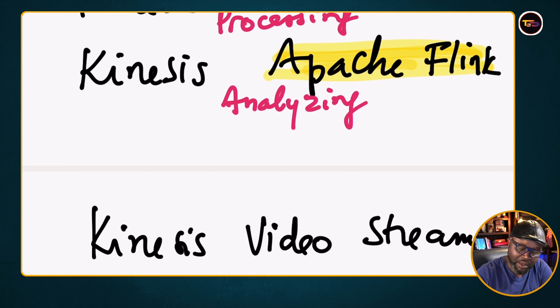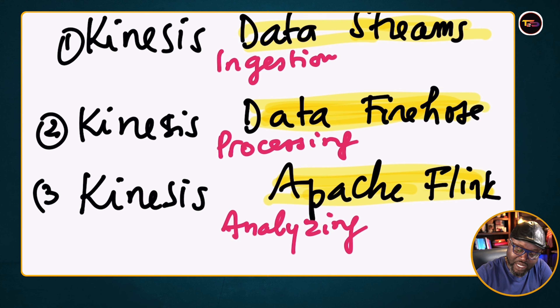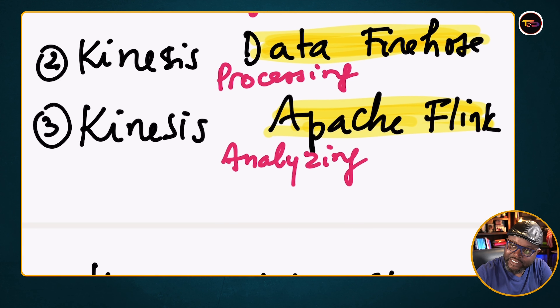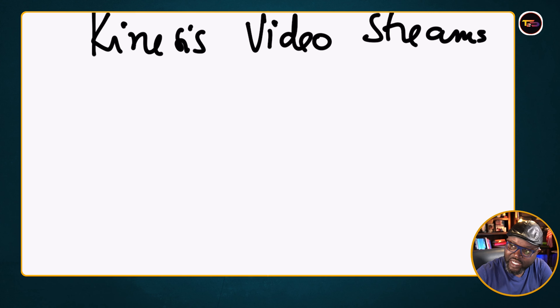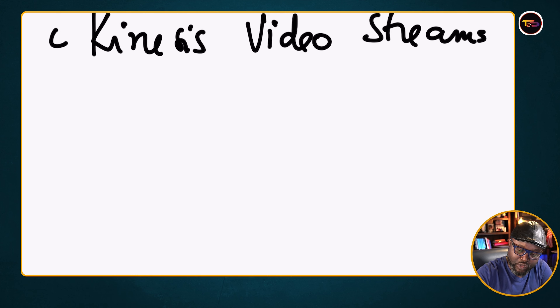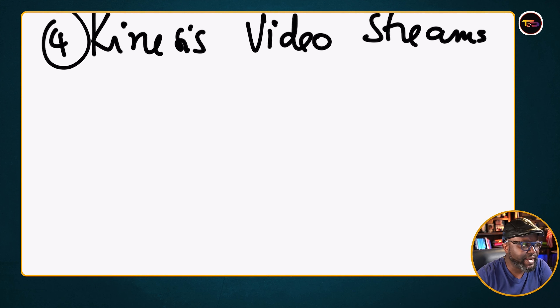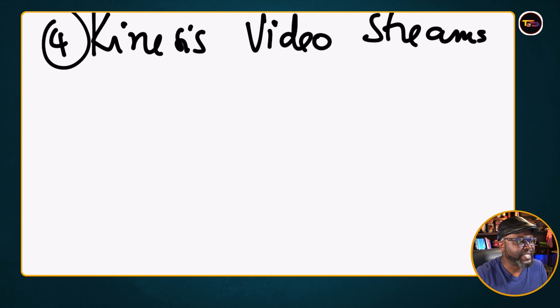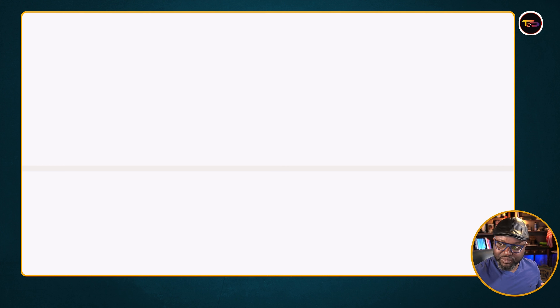You can also use Kinesis Video Streams — that's another tool Amazon provides. So the three main ones are mostly for data, and then you can still use Video Streams to ingest whatever video data you need to store.